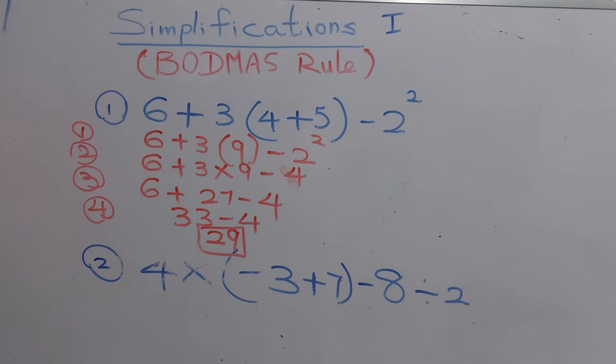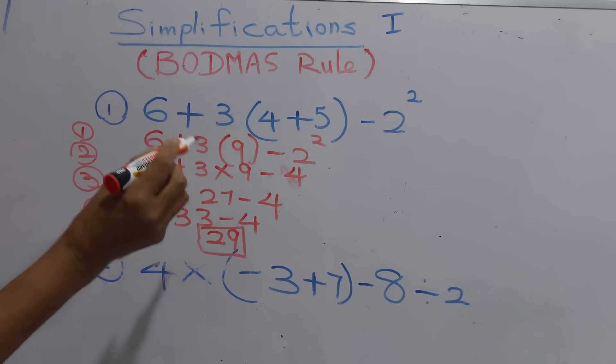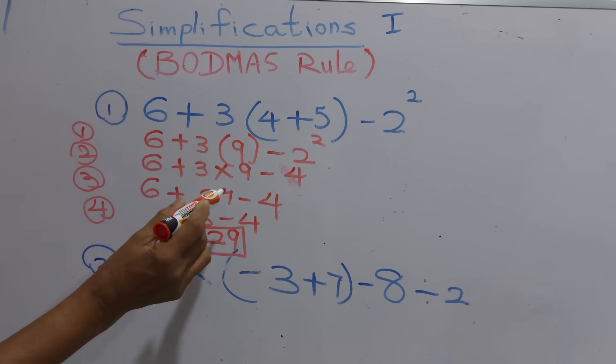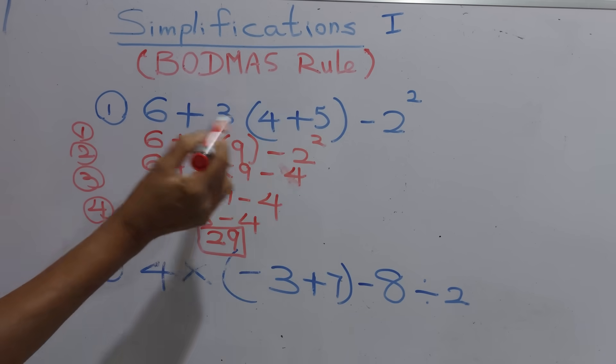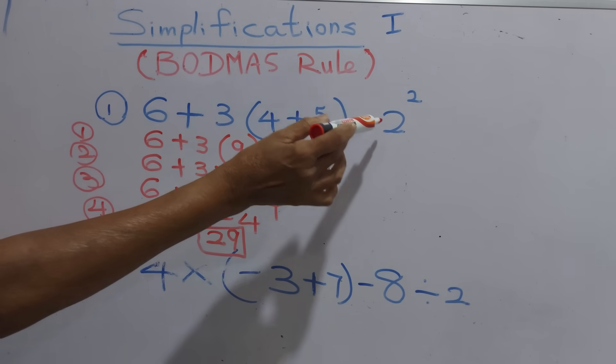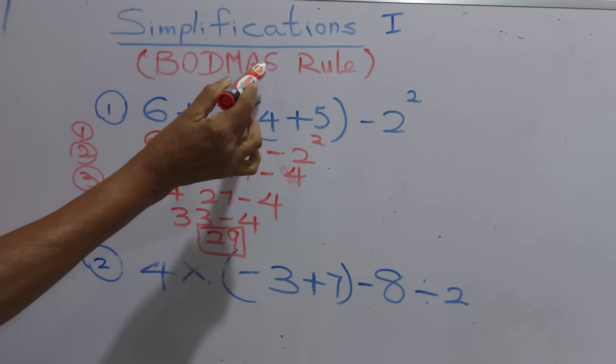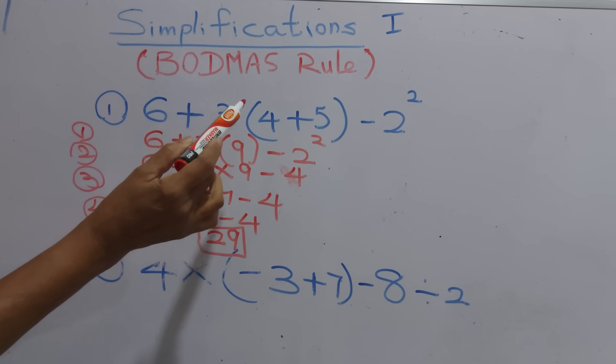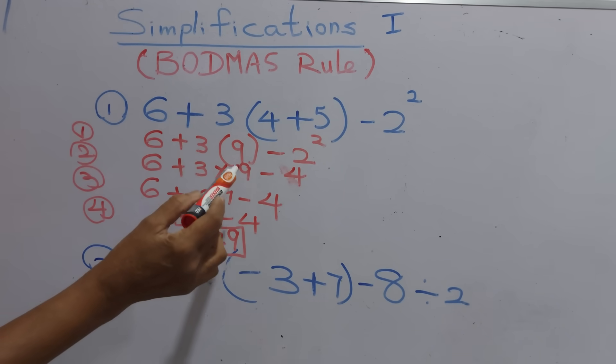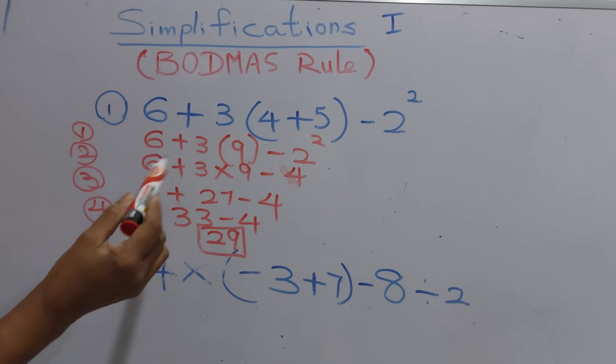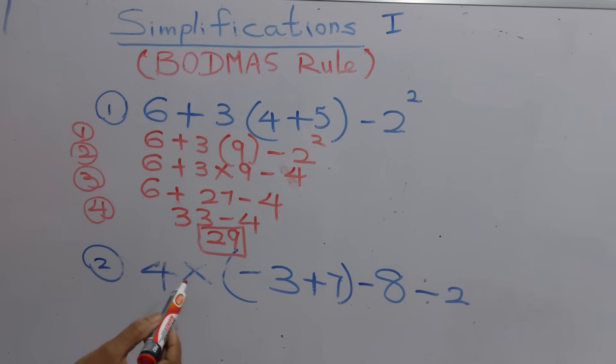Remember, always follow the order of operation: first brackets, removing brackets, then the order, then divisions, then multiplications, additions, subtractions. That's how we make sure our answer is correct. Try this sum at home.